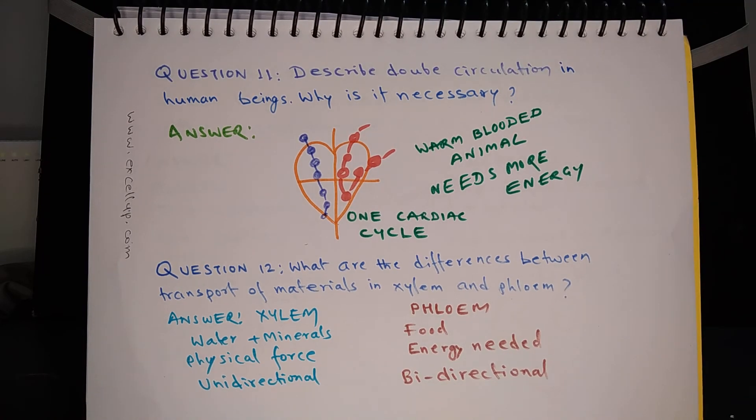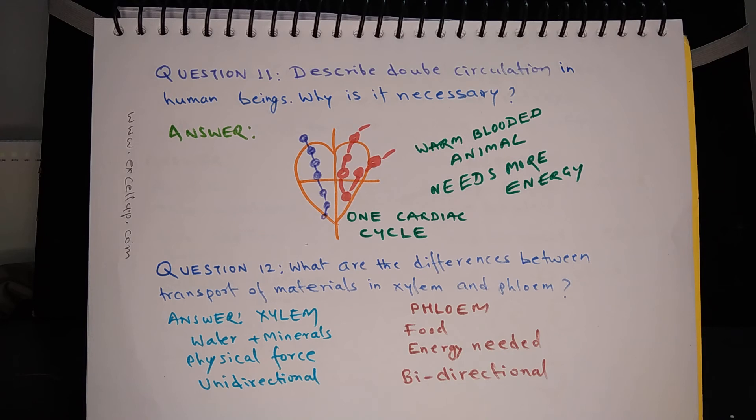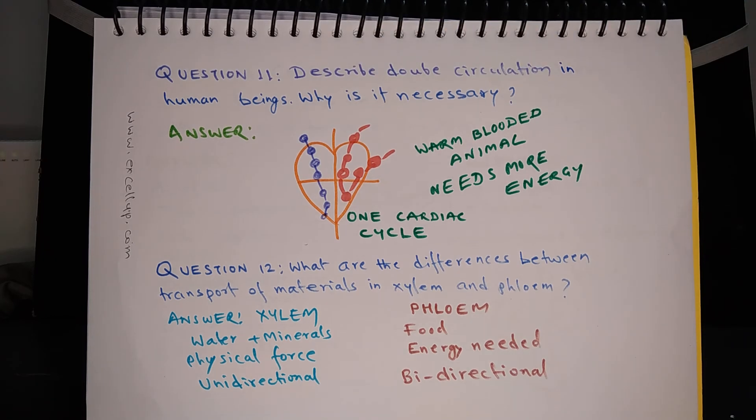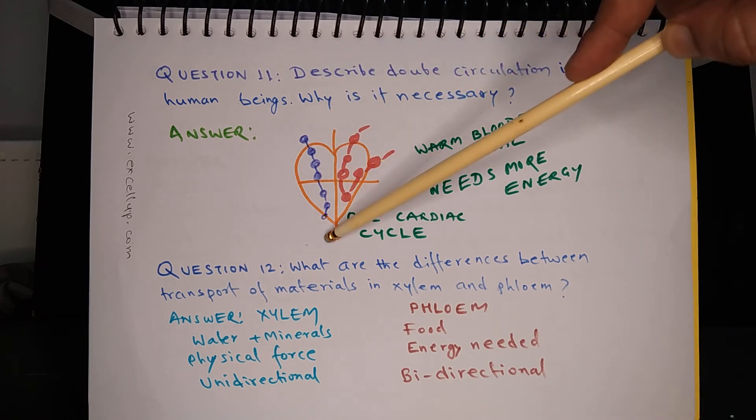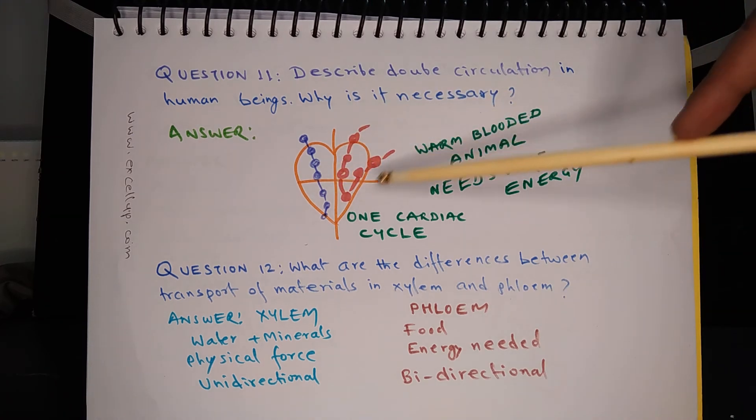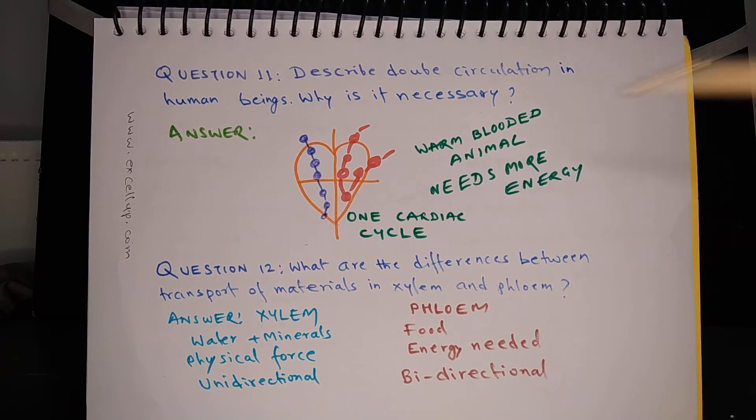Question 11: Describe double circulation in human beings. Why is it necessary? This figure shows a heart, the way most people draw, especially teenagers. This is the right side of the heart and this is the left side of the heart. What happens in one cardiac cycle is blood passes through the heart twice. Once this is the circulation of deoxygenated blood as shown by purple color, and second is the circulation of oxygenated blood. Since there are two distinct circulations in one cardiac cycle through the human heart, hence this is called double circulation.